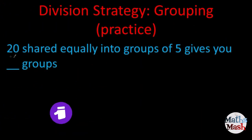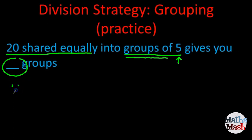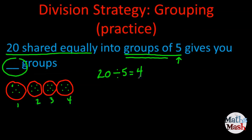Our next one: 20 shared equally into groups of five gives you how many groups? I've got 20, and sharing equally with a divisor of five — groups of five — but we don't know how many groups. So I'm going to make groups of five until I get to 20: five, ten, fifteen, twenty. I draw circles around them, and I can see I've got four groups. So our quotient is four. Just to check: five times four gives me 20, or four times five gives me 20. Correct.